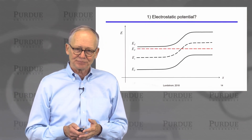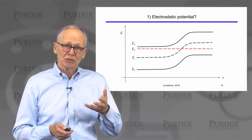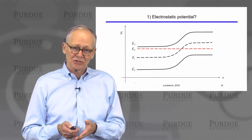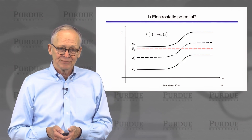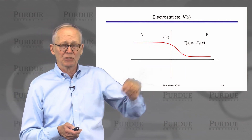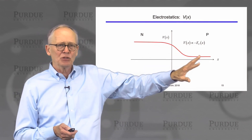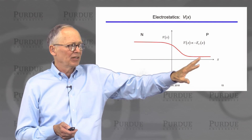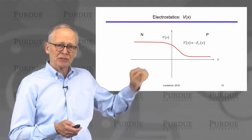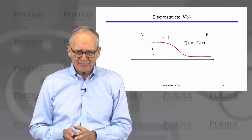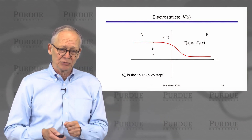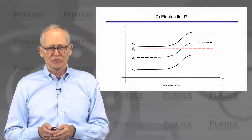For the electrostatic potential: whenever the potential goes up, the electron energy goes down, so we simply take the conduction band versus position and flip it upside down. We'd get an electrostatic potential versus position where we might choose the P-side as our zero reference, and then the potential increases as we go toward the N side. We can see there is some potential difference between the N side and the P side — this difference is called the built-in voltage of the P-N junction.